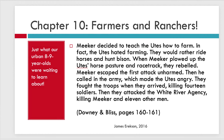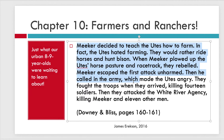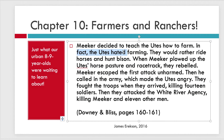So this is from a Colorado history textbook — Downey and Bliss, pages 160 and 161: 'Meeker decided to teach the Utes how to farm. In fact, the Utes hated farming. They would rather ride horses and hunt bison. When Meeker plowed up the Utes' horse pasture and racetrack, they rebelled. Meeker escaped the first attack unharmed. Then he called in the army, which made the Utes angry. They fought the troops when they arrived, killing 14 soldiers. Then they attacked the White River agency, killing Meeker and 11 other men.' There's a lot of humanity in this passage — it had this difficult conflict and simple things kids are going to be able to understand. I would stop and have a good long discussion about being forced to do work you don't like and having your playground uprooted.